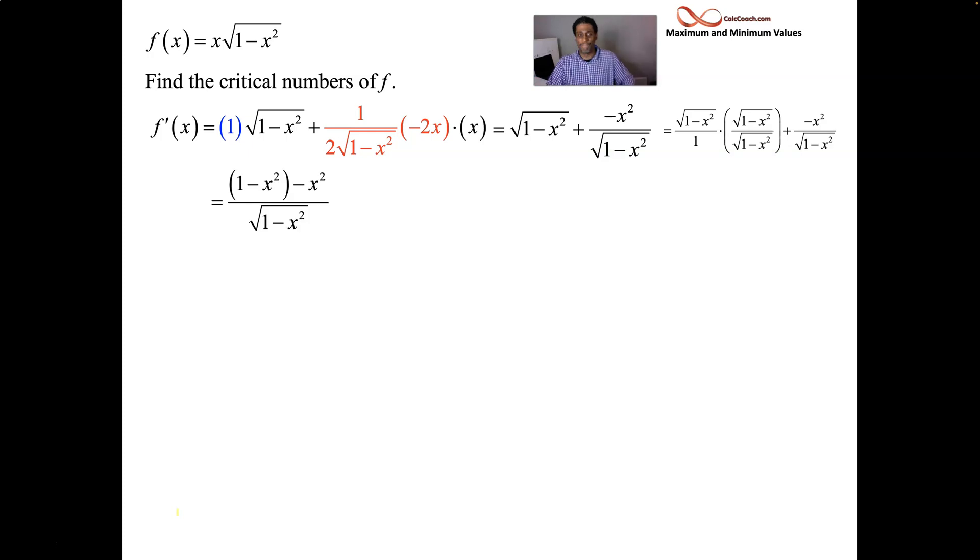Now, this is almost the most simplified version of our derivative. Hopefully, you can see that we can take those two x squares, they're both negative x squares, and combine them. We now have the simplified version of the derivative.